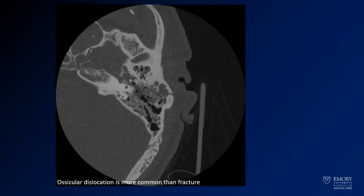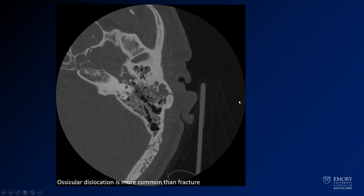Here is our case. What you see is a temporal bone fracture with fractures extending through the floor of the middle cranial fossa and also extending through the temporal bone. There's a lot of fluid in both the mastoid air cells and the middle ear, and in this case you also have ossicular dissociation — the malleus and incus are no longer associated the way they should be.